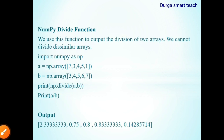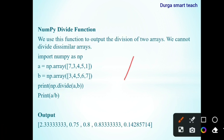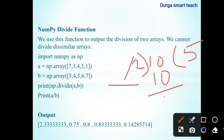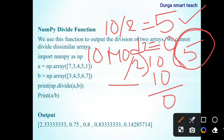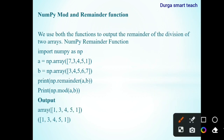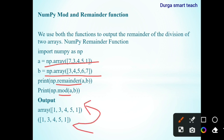The next one is mod. What is the difference between division and mod? In division we get the quotient — for example, 10 divided by 2 is 5. For mod, the answer is the remainder: 10 mod 2 is 0. If you want to find the remainder you need to use the remainder function or you can use the mod function — both give the same output.